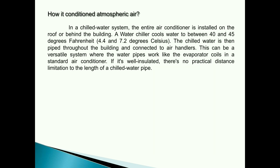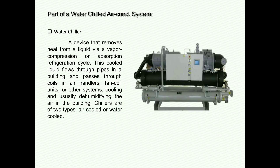In a chilled water system, the entire air conditioner is installed on the roof or behind the building. A water chiller cools water to between 40 and 45 degrees Fahrenheit, or 4.4 and 7.2 degrees Celsius. The chilled water is then piped throughout the building and connected to air handlers. This can be a versatile system where the water pipes work like the evaporator coils in a standard air conditioner. If it's well insulated, there's no practical distance limitation to the length of a chilled water pipe.